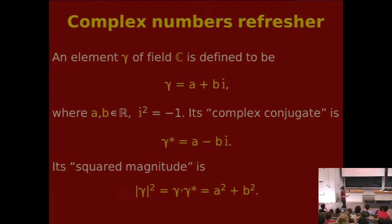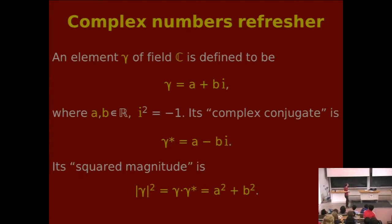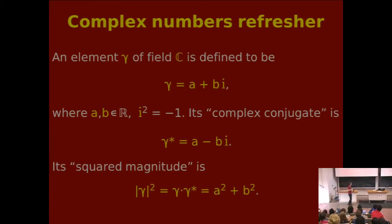Let me quickly remind you about complex numbers. A complex number is a number of the form a + bi, where a and b are real numbers and i is the square root of minus 1. The complex numbers form a field. This number has a conjugate: if it's a + bi, then its conjugate is a − bi, written with a star. If you take gamma and multiply it by gamma-star, you get a² + b², called the squared magnitude of gamma. If you're only working with real numbers, b is zero, so gamma is just a, and the magnitude squared is just a².